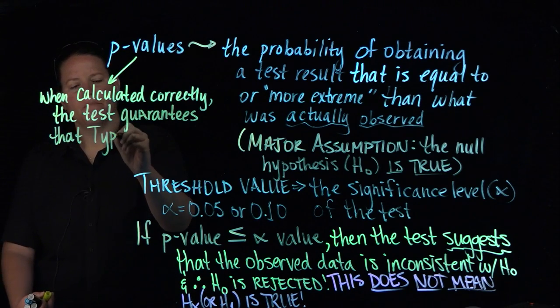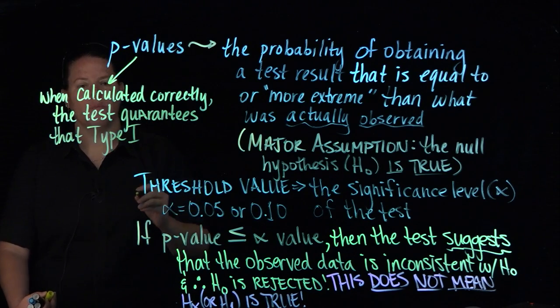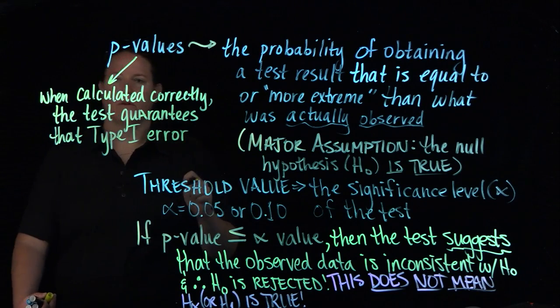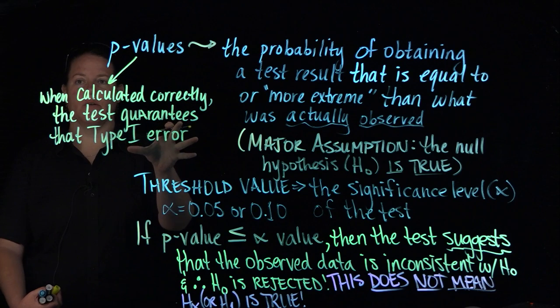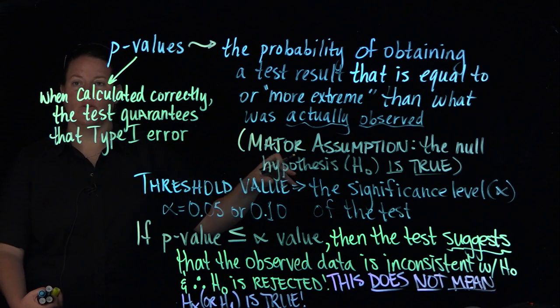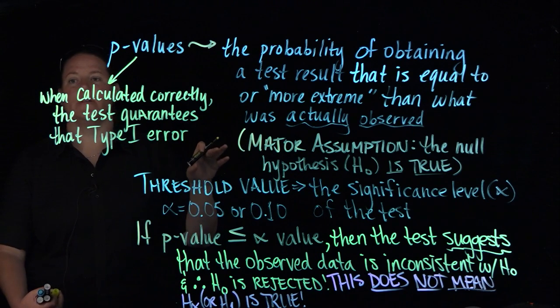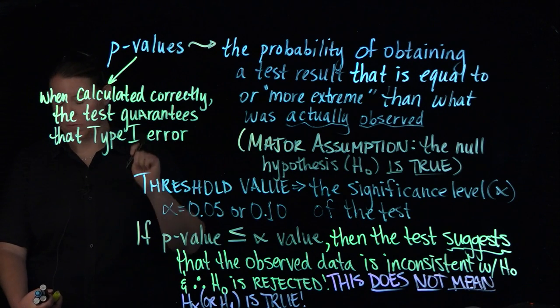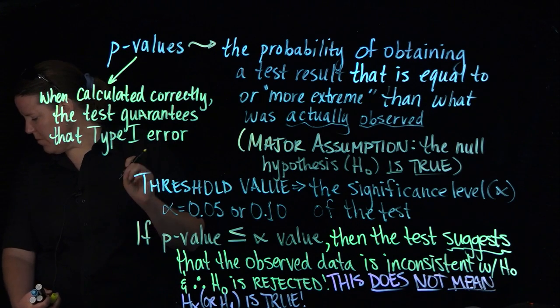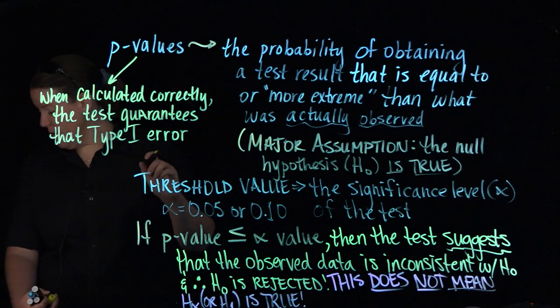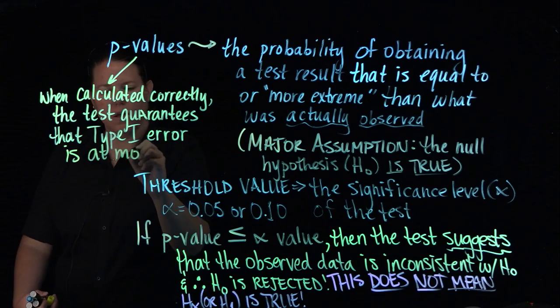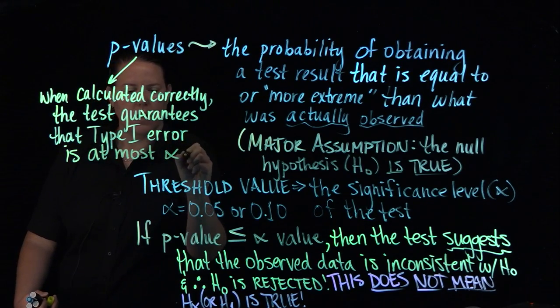the test guarantees that type 1 error, and remember what type 1 error is, right? If you don't remember what type 1 error is, there's a video to talk about what type 1 error is, but that's basically rejecting the null when it's true.